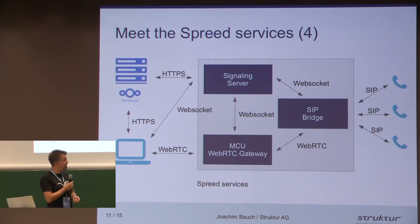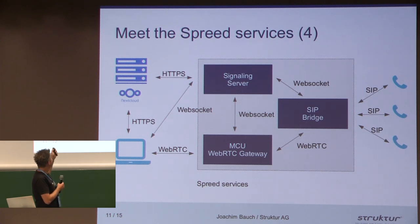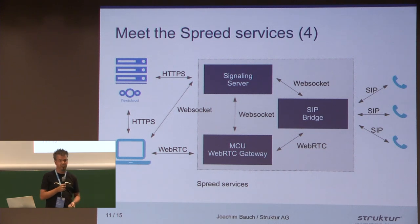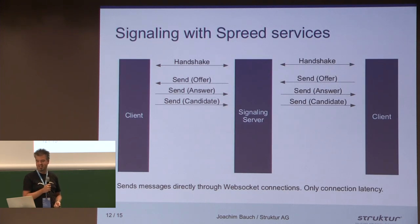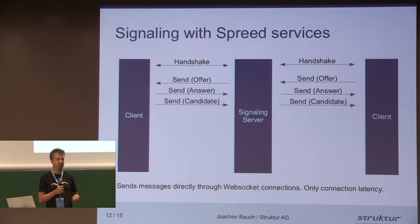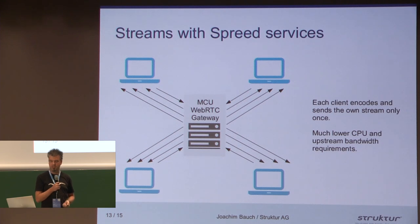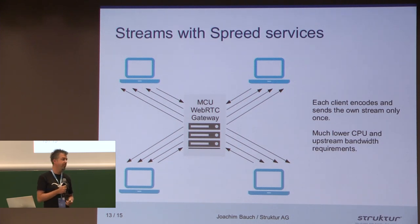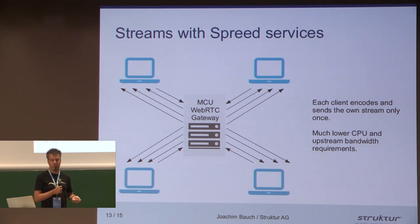So how does that look like? The clients communicate to Nextcloud and to the different services, which are all interconnected. The signaling is direct — no more long polling involved. And the streaming goes through the WebRTC Gateway, so every client only has to publish his stream once, no matter how many subscribers there are, because everything goes through that gateway.